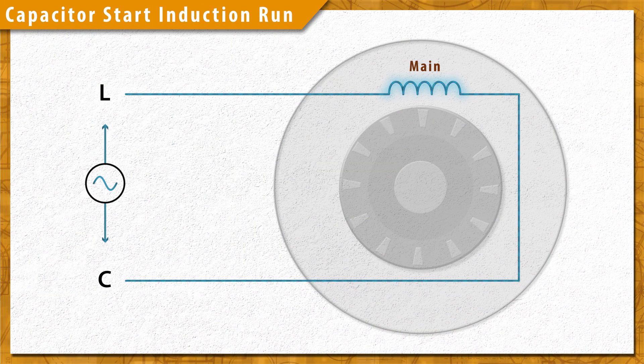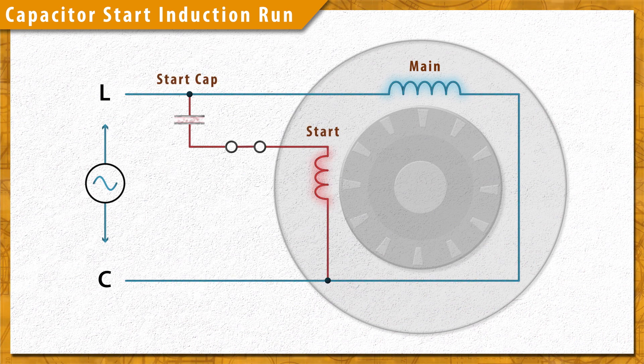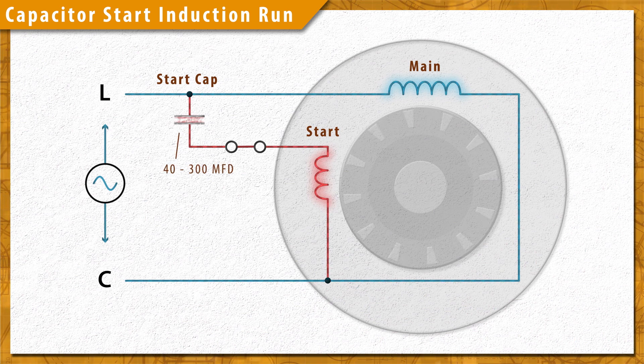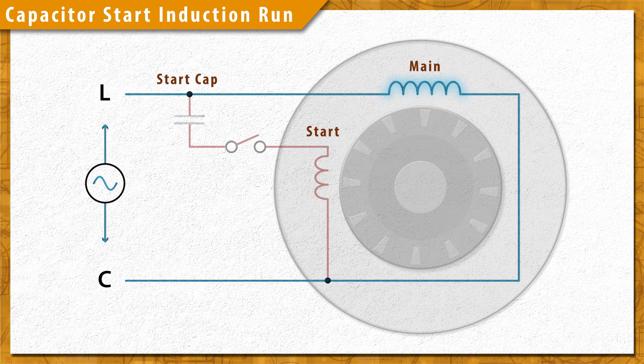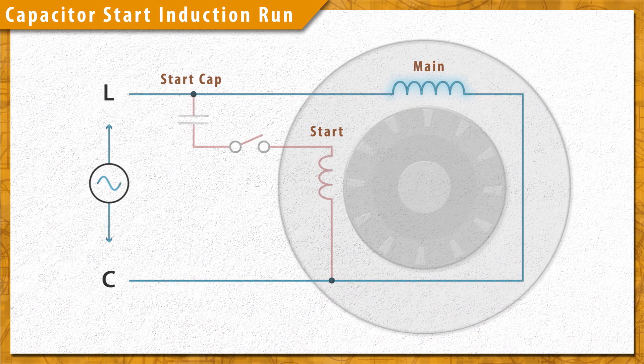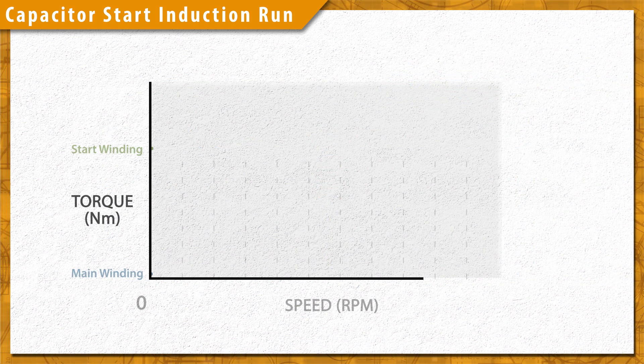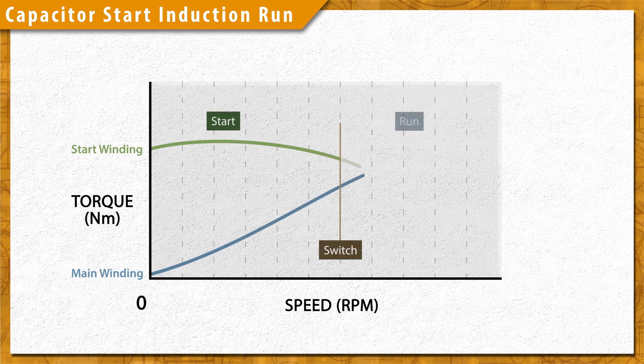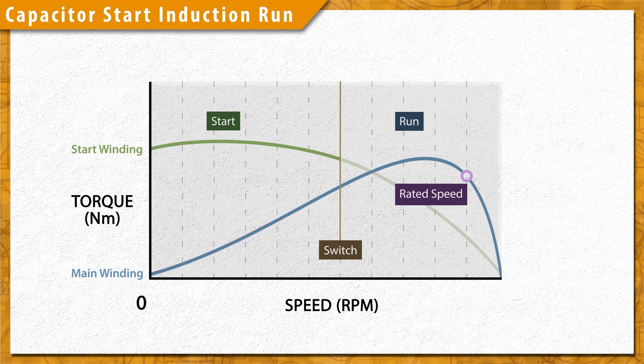Capacitor start motors use a large capacitor to energize the start winding. These start capacitors have a high capacitance of around 40 to 300 microfarads and are made to stay in the circuit only for startup. When the motor reaches running speed, the start winding and capacitor are removed from the circuit by a centrifugal switch or time delay relay. These are also known as capacitor start induction run motors, or CSIR. Overall, these motors have a high starting torque, which makes them good for pumps and compressors.